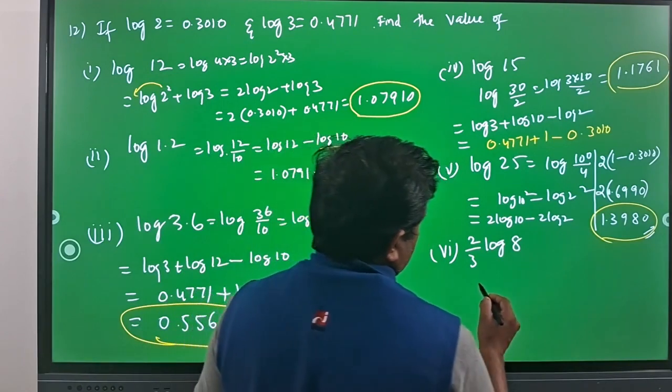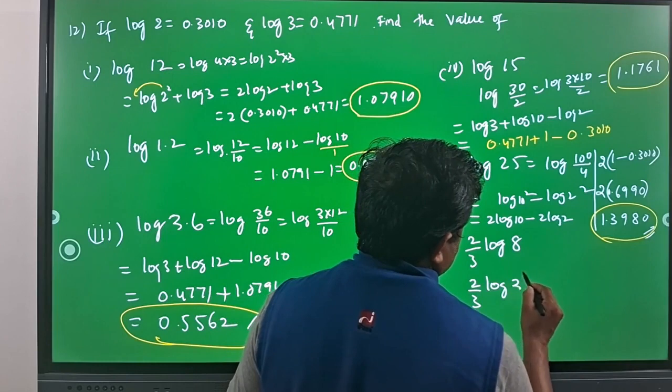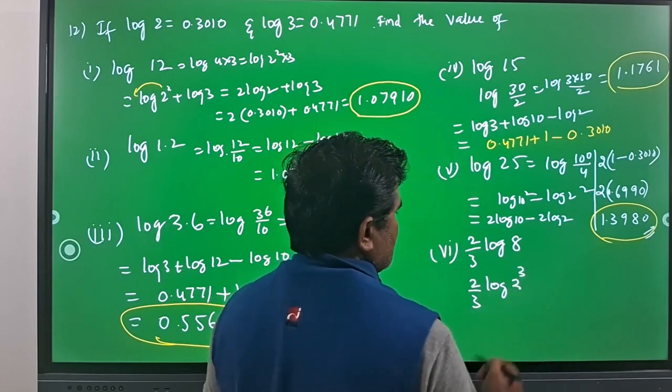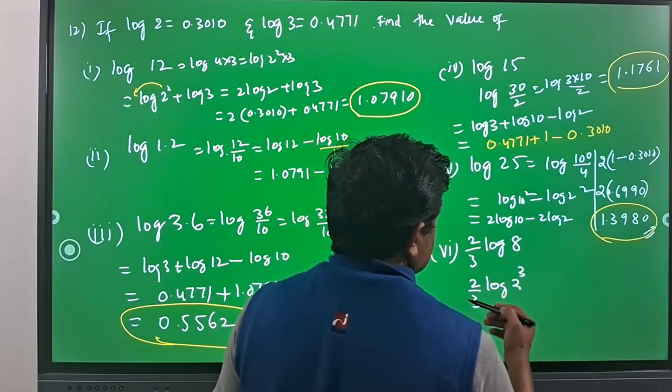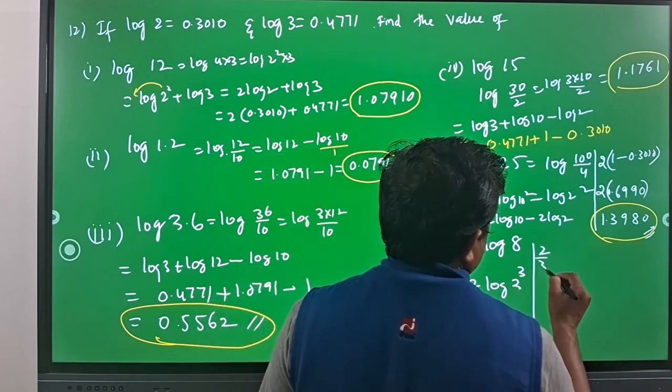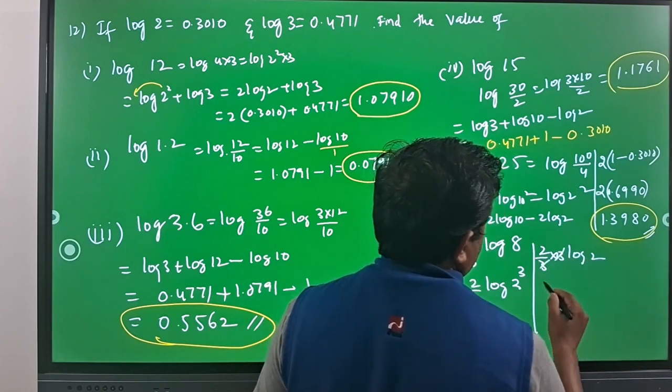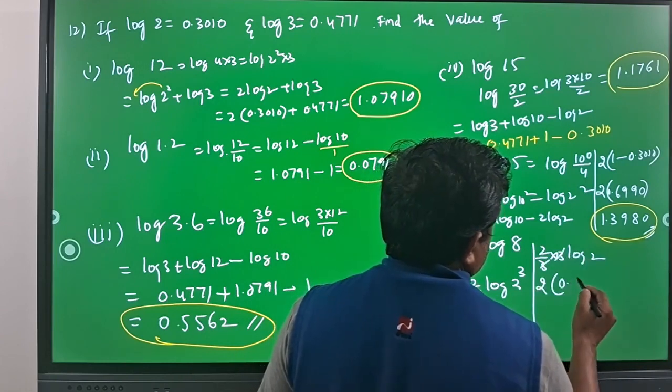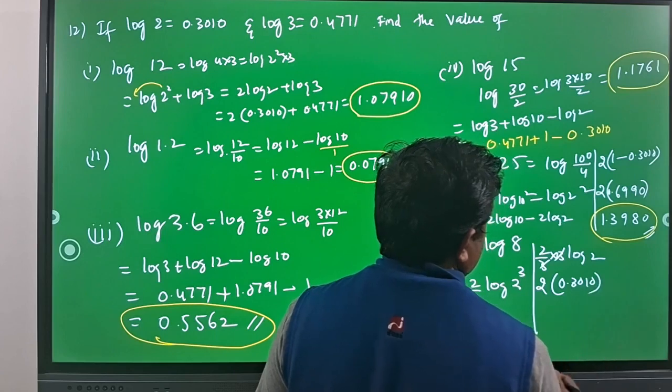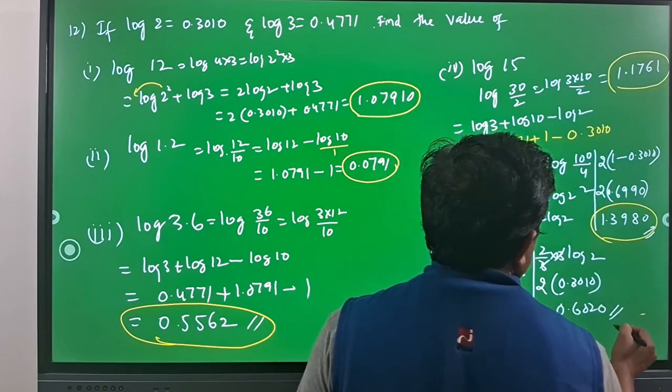Now come to here: 2 by 3 log 8 can be written as 2 by 3 log 2 cube. By bringing this 3 to coefficient side, you will have 2 by 3 into 3 log 2. 3 gets cancelled, you will have 2 into 0.3010, which is equal to 0.6020.